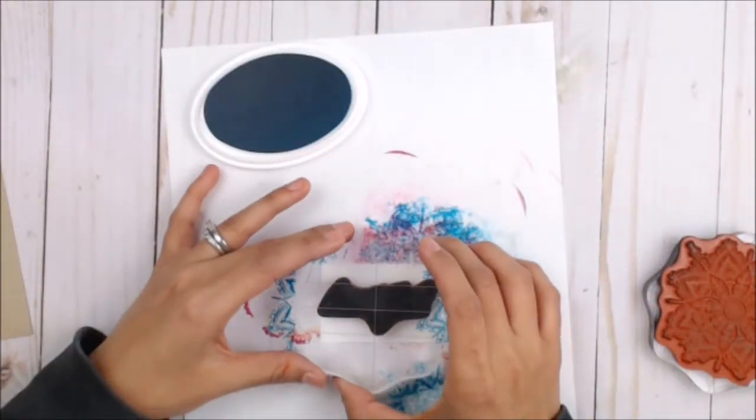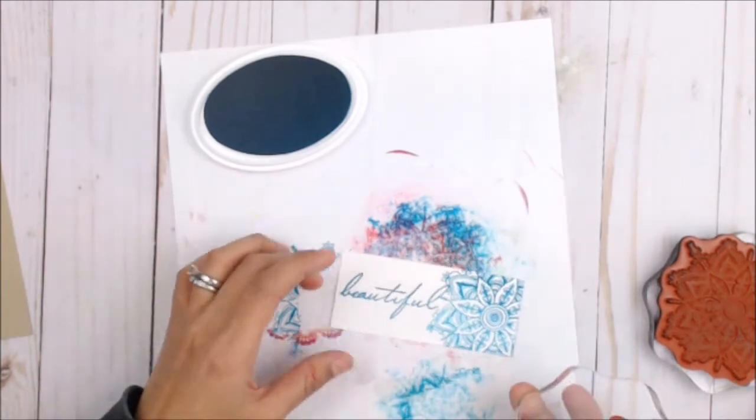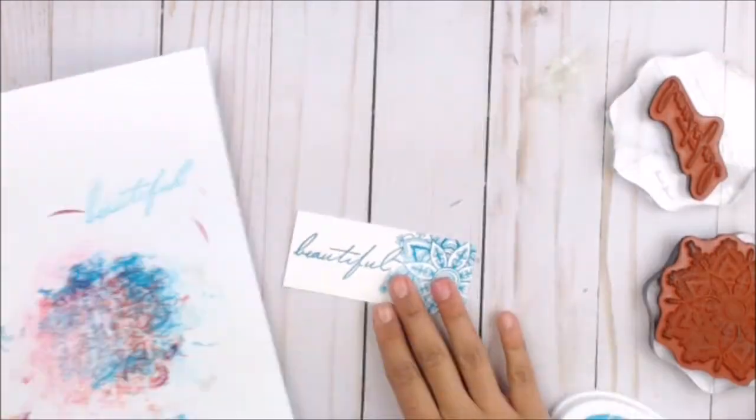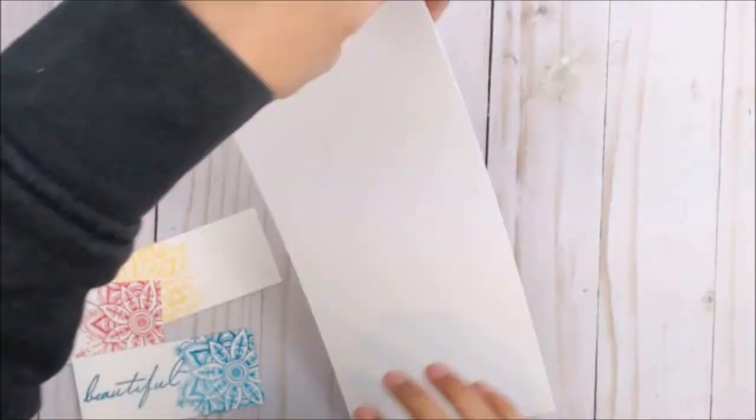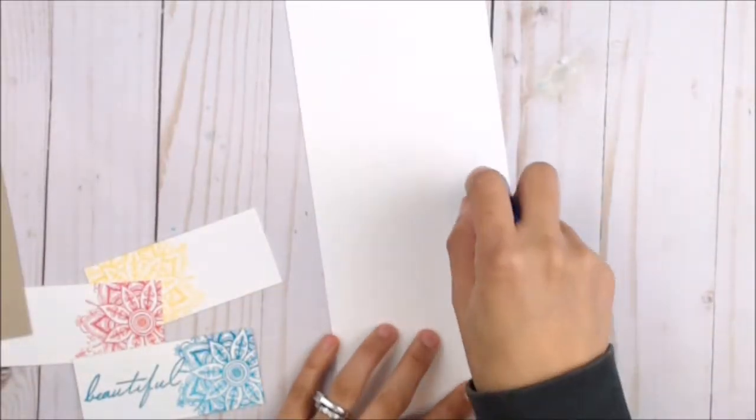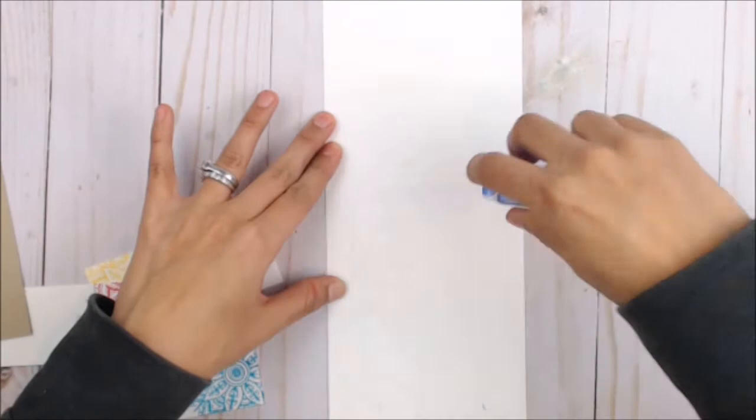Now using the same blue color, I'm going to stamp the word 'beautiful' from the Bohemian Background stamp set as this is going to be the sentiment for it. We're going to go ahead and move all of our ink colors to the side. Now it's time to put our card together.